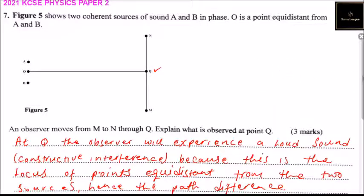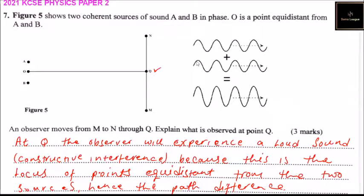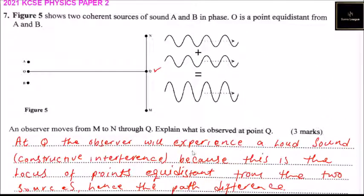So, this is a diagram explaining what is constructive interference. These are two waves of identical wavelength. When they combine and form one wave, whose amplitude is the sum of the two. So, this is what we call constructive interference. This is what we call constructive interference.